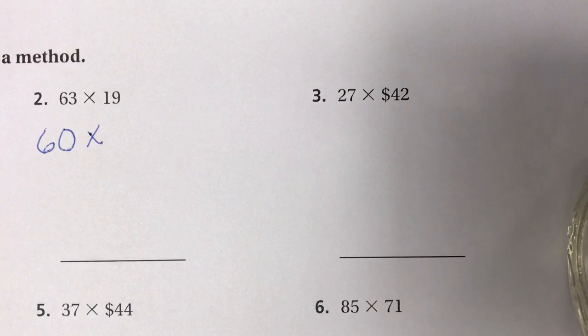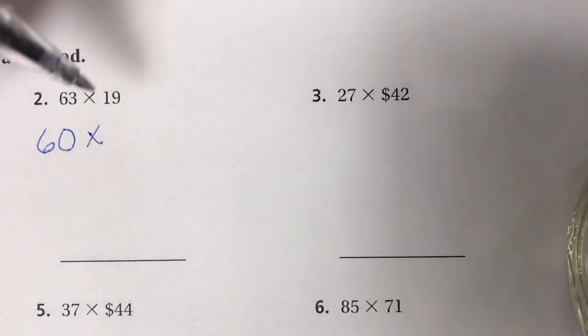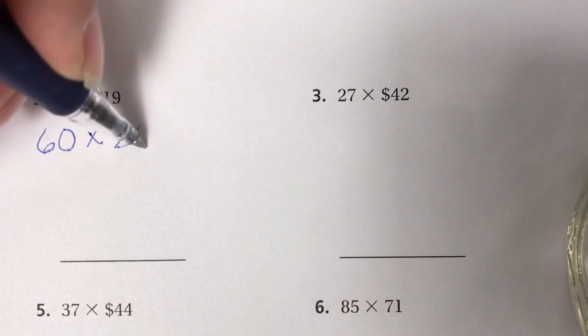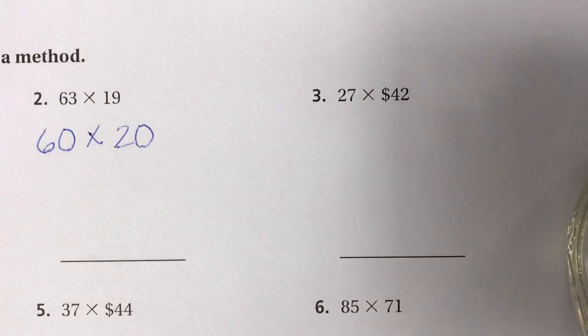I'm going to look at my other factor, which is 19. 19 is closer to 20 than it is to 10, so I'm going to round it up to 20.